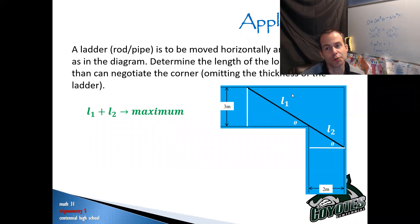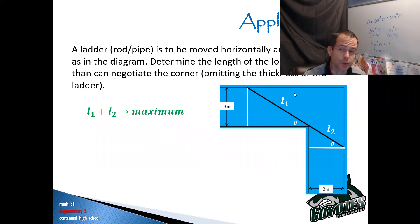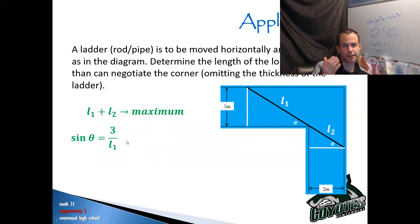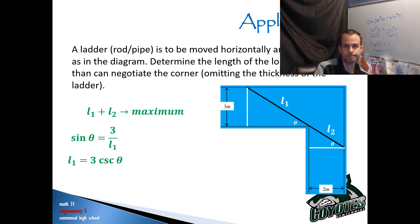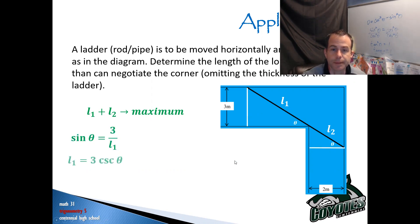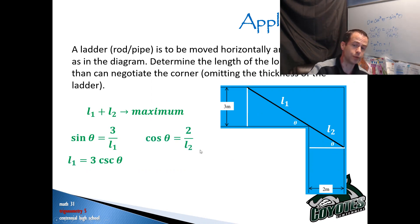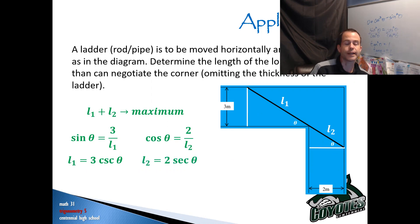I want a way to represent L1 using trig. The height here is 3, so sine of theta is 3 over L1, meaning L1 equals 3 over sine theta. Instead of writing 3 over sine theta, I'll write 3 cosecant theta, since one over sine is cosecant. Then for L2: cos of theta is 2 over L2, which means L2 equals 2 over cos theta, written as 2 secant theta. So L1 plus L2 is 3 cosecant theta plus 2 secant theta — that is the function I want to maximize.